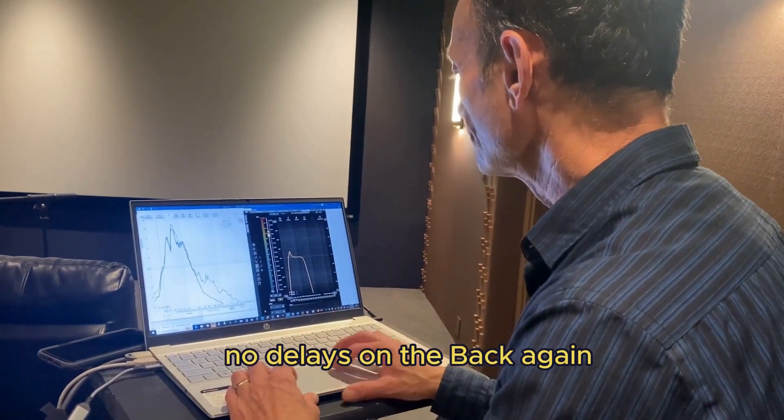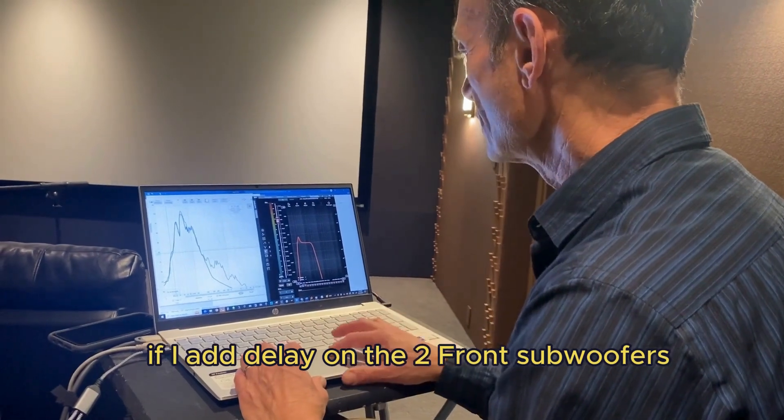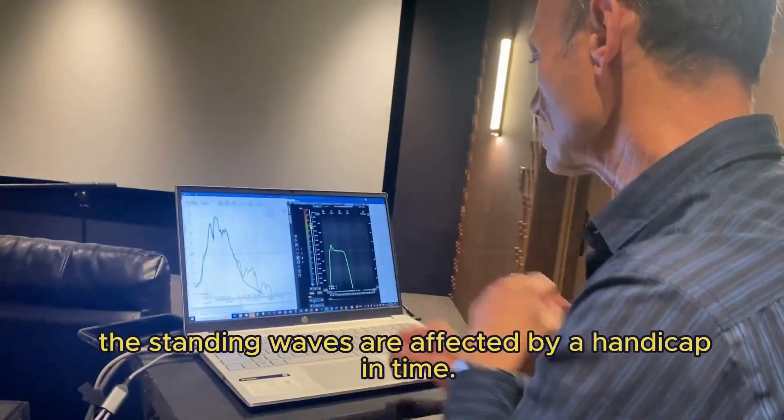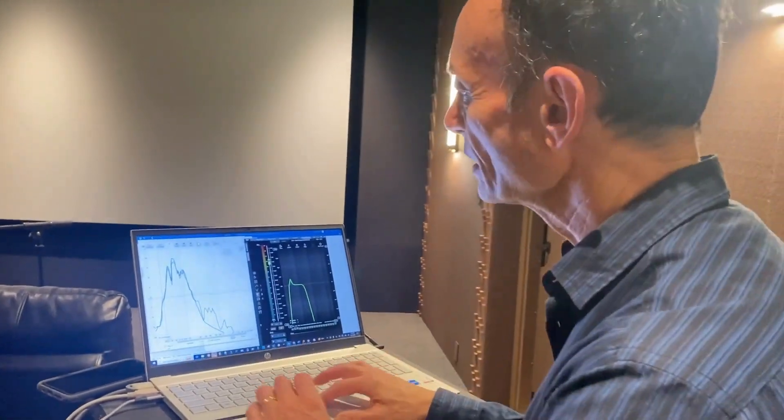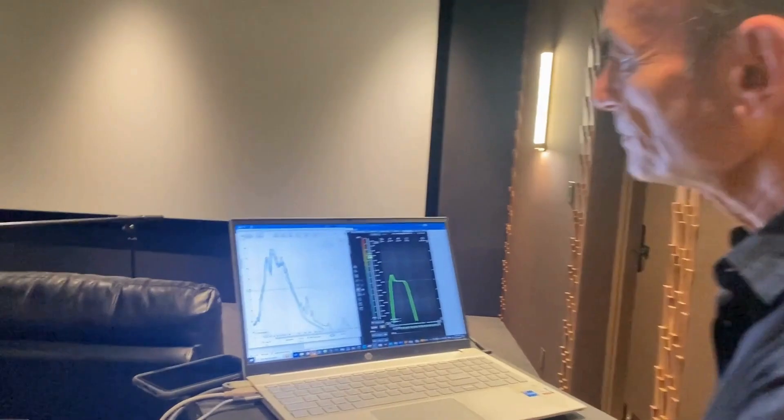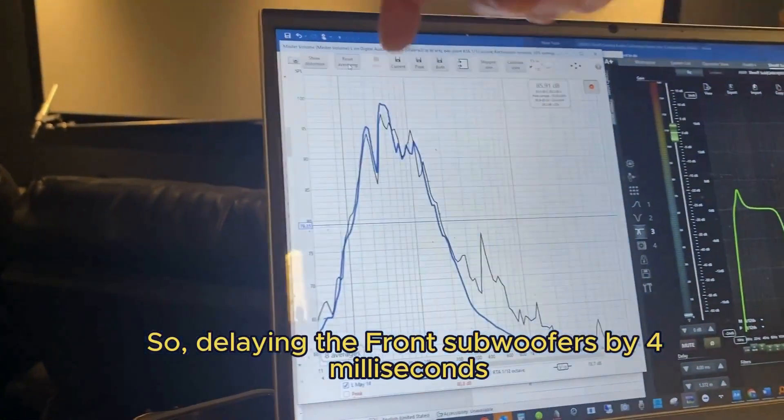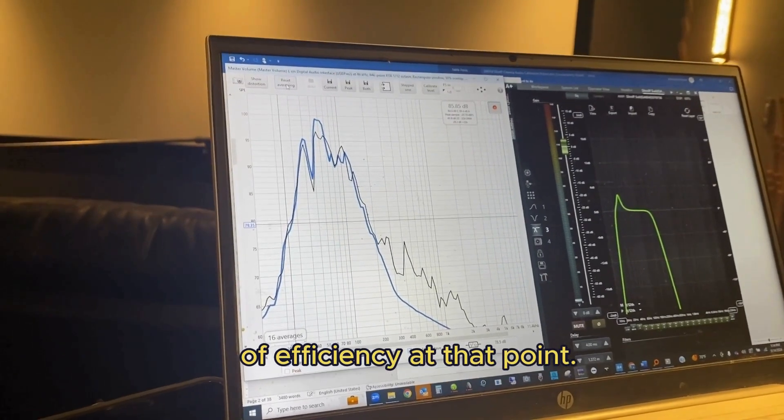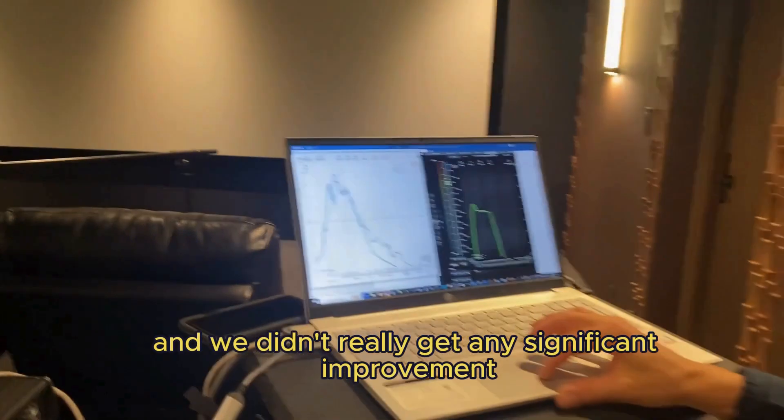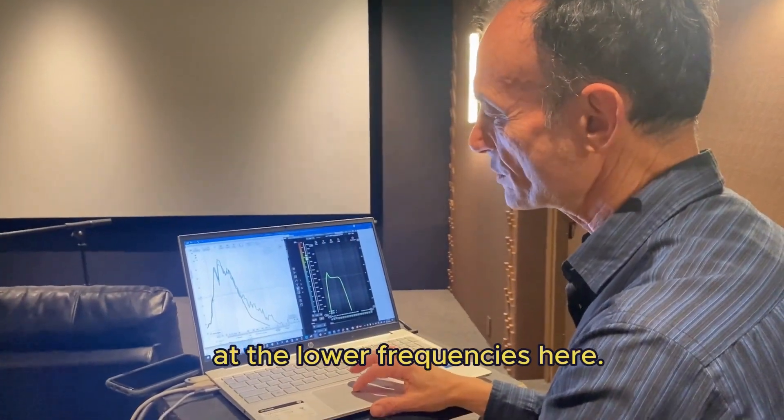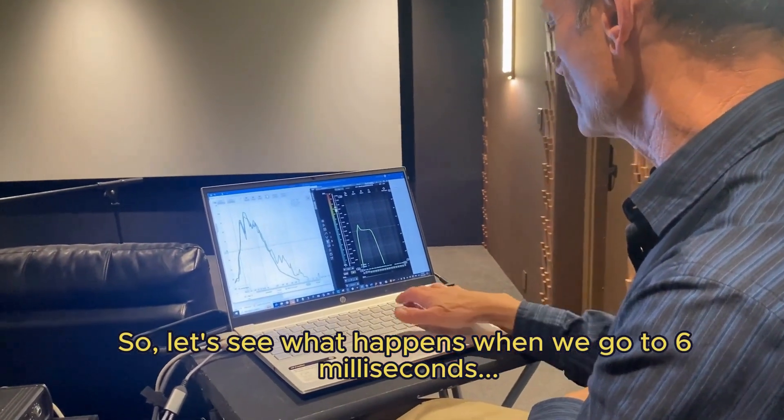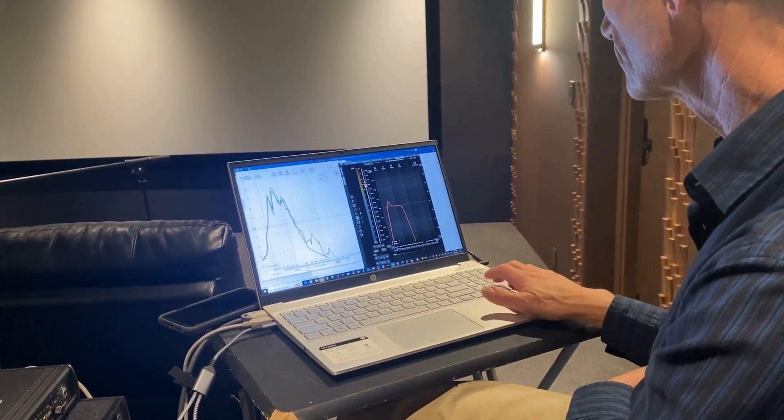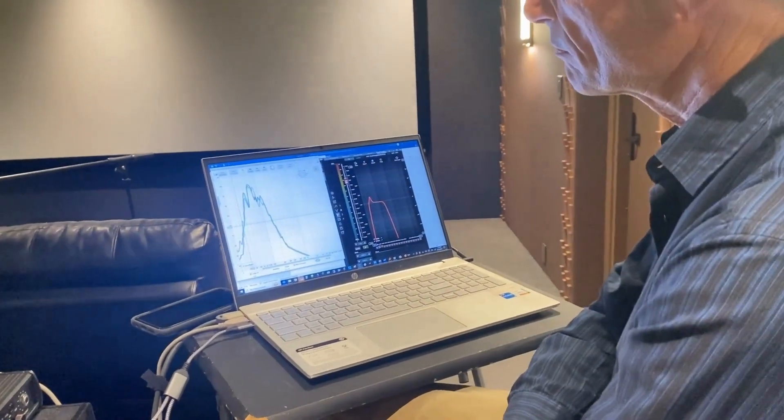No delays in the back again. I'm going to check and see what happens if I add delay on the two front subwoofers to see how the standing waves are affected. Delaying the front subwoofers by four milliseconds reduced this peak, which makes it look flatter, but it loses three or four dB of efficiency at that point. I'm not excited about that, and we didn't get any significant improvement at the lower frequencies.